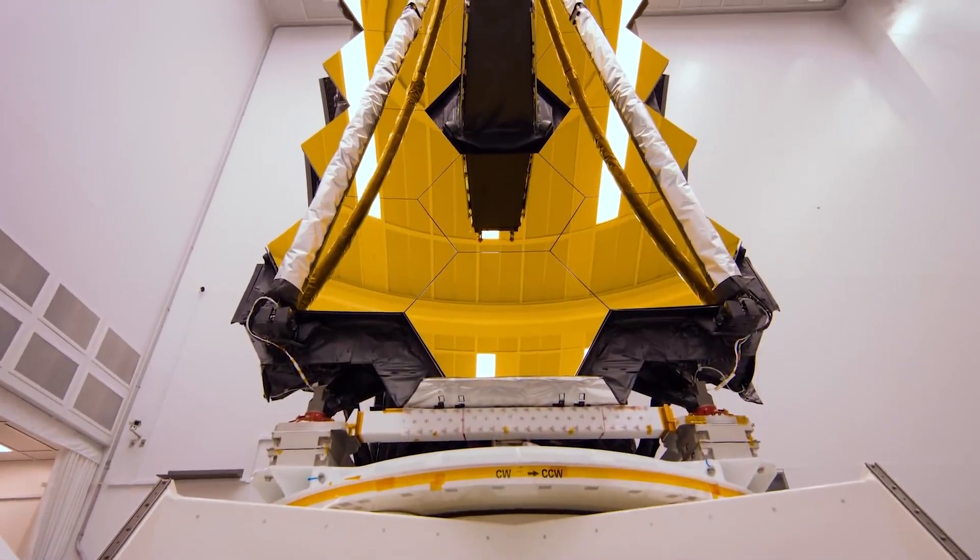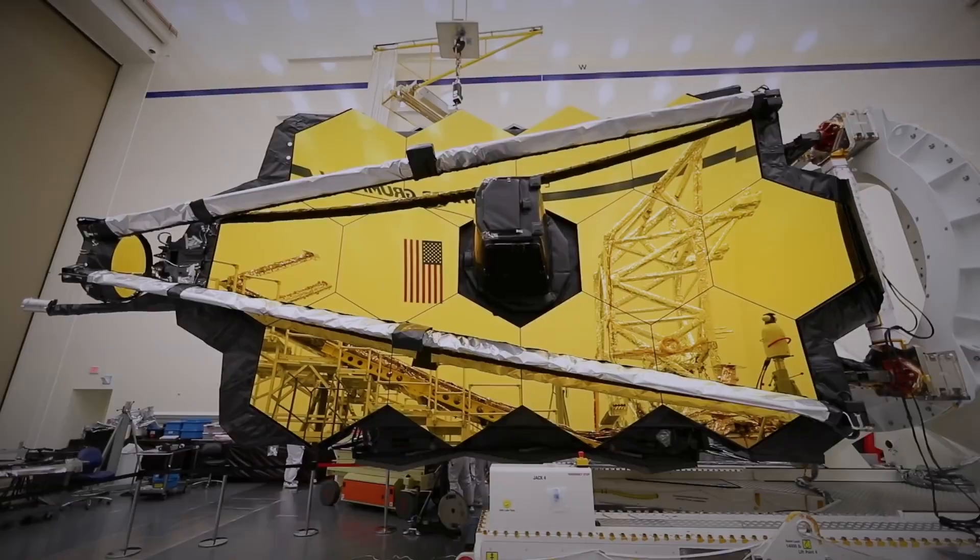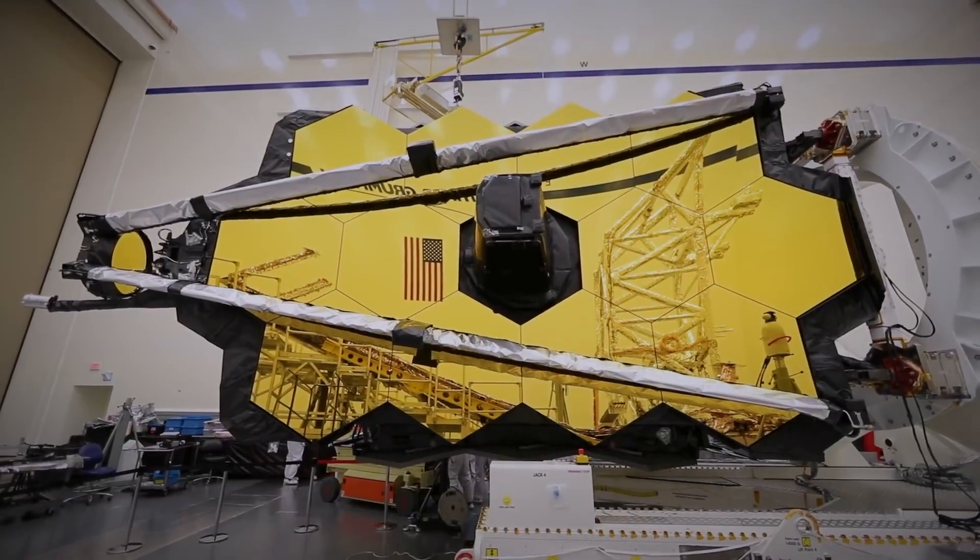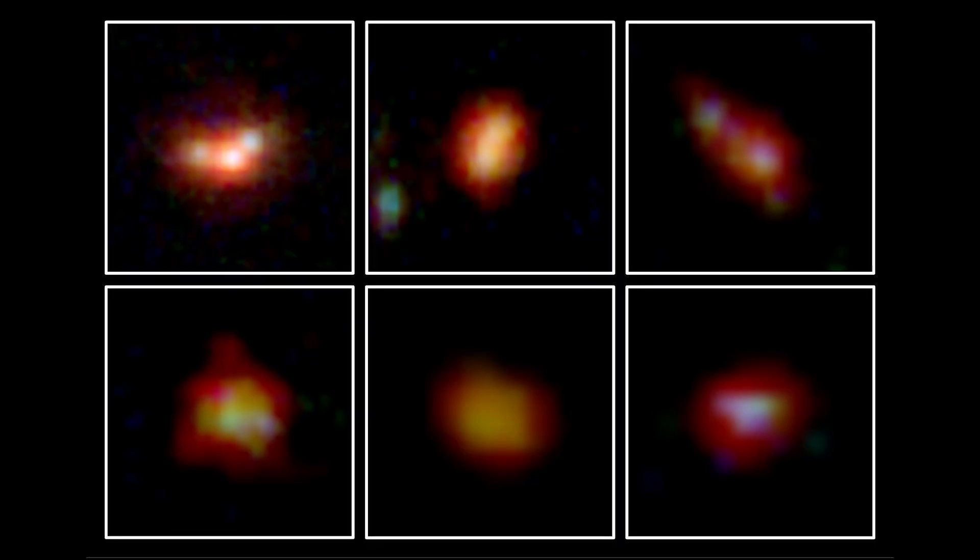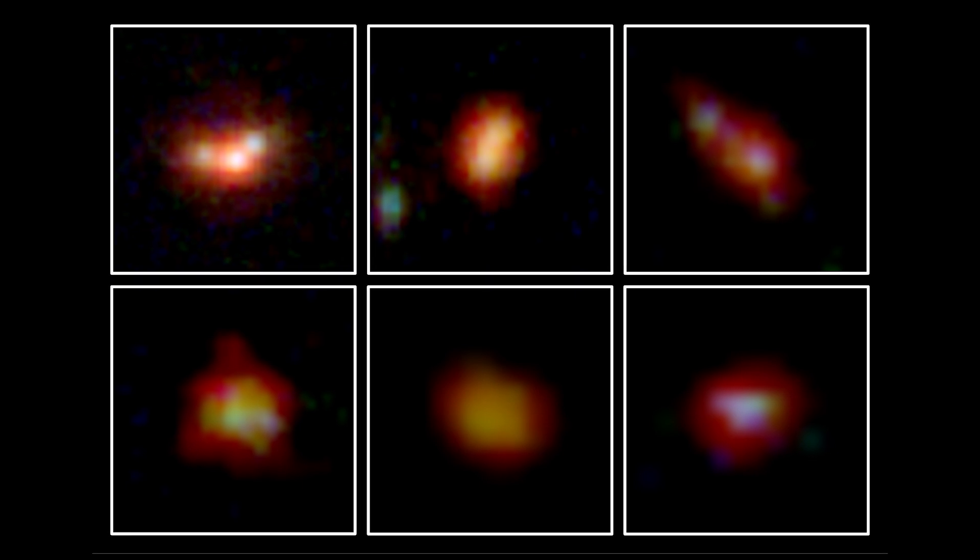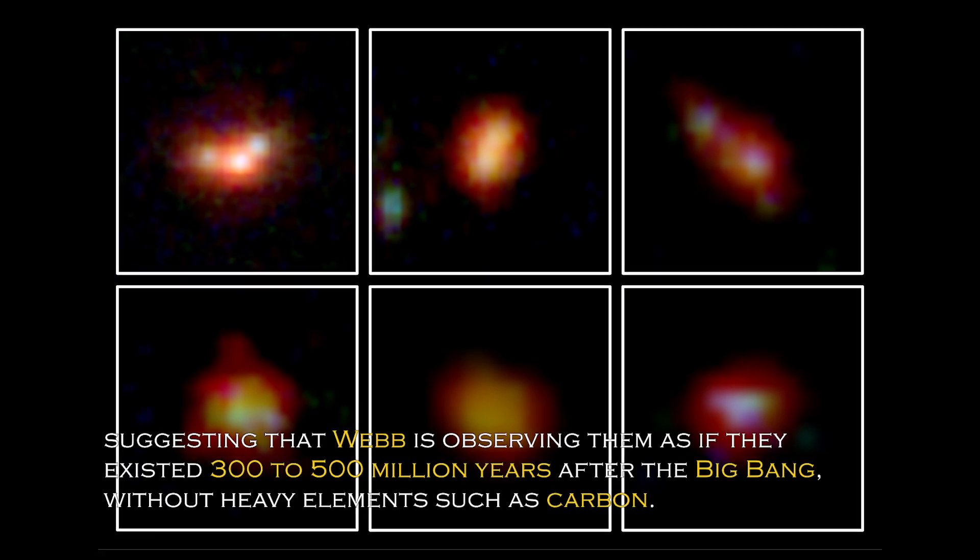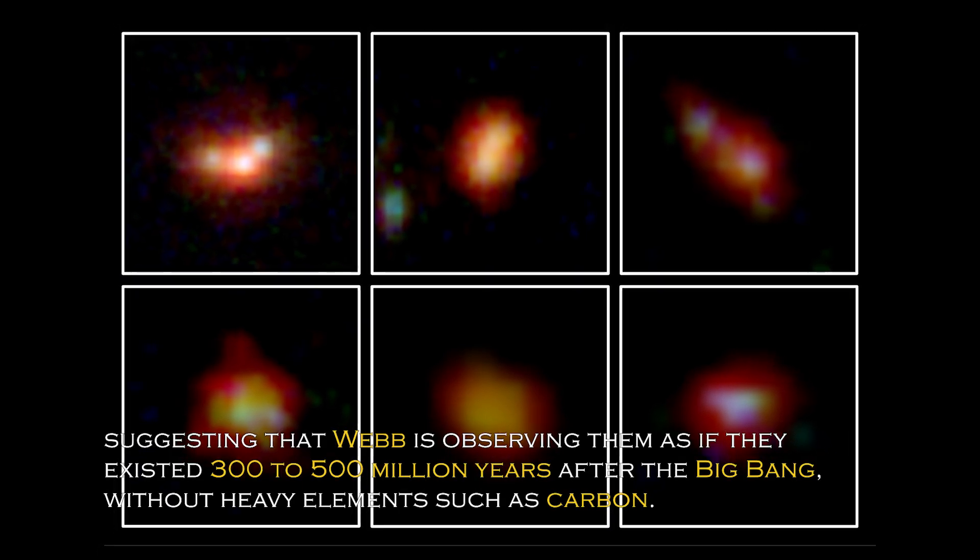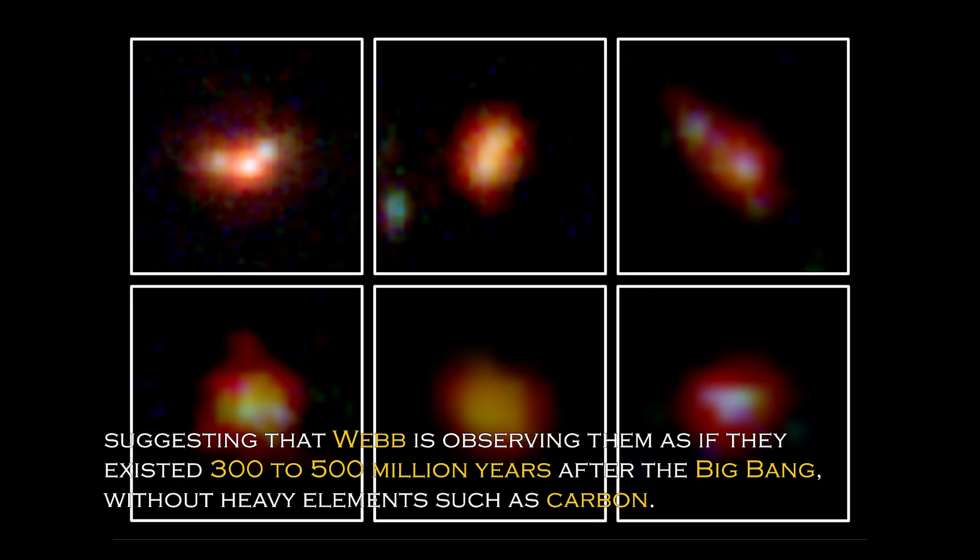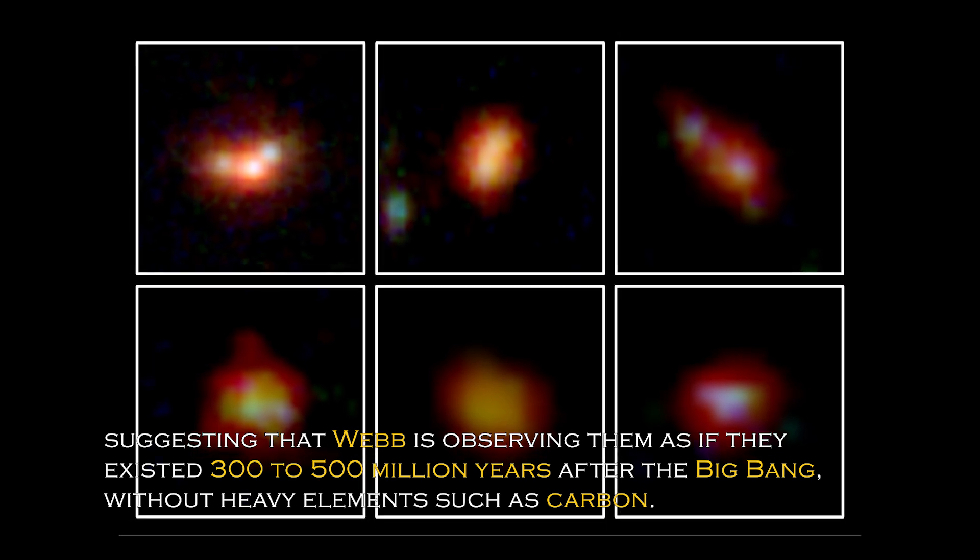Data obtained from Webb's NIRSpec spectrometer and near-infrared camera have revealed that four of the six primordial galaxies have extreme redshifts, suggesting that Webb is observing them as they existed 300 to 500 million years after the Big Bang, without heavy elements such as carbon.